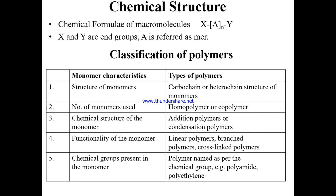Based on the functionality of monomers, polymers may be linear, branched, or cross-linked. Based on the chemical groups present, polymers are named after those groups — such as polyamide, polyester, polyurethane, etc. This is the basic classification of the polymer.